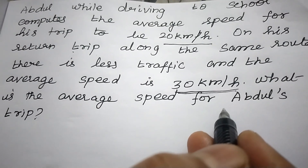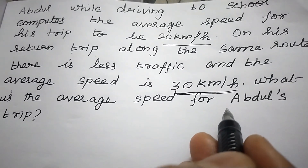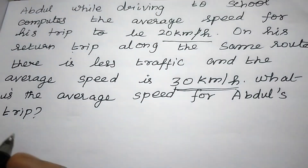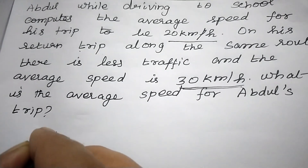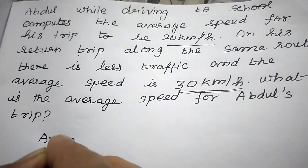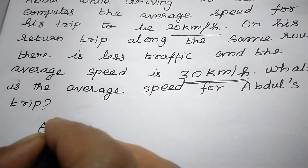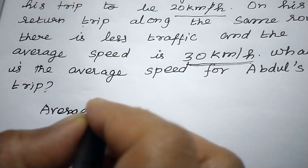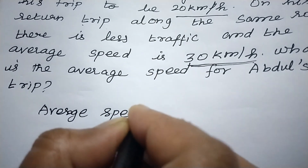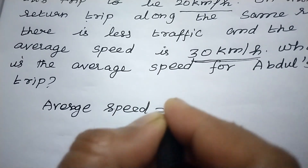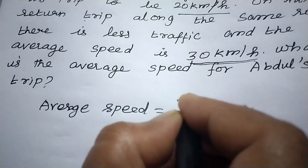So to find the average speed — what is the formula to find the average speed? Average speed equals total distance divided by total time taken.